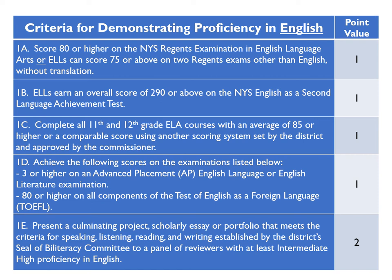Criterion 1A: students may score 80% or higher on the New York State Regents examination in English Language Arts. ELLs may also earn a point under this criterion by scoring 75% or above on two Regents exams other than English without translation. Criterion 1B: ELLs may achieve an overall score of 290 or better on the New York State English as a Second Language Achievement Test, also called the NYSESLAT. Criterion 1C: students may complete all 11th and 12th grade ELA courses with an average of 85% or higher. Criterion 1D: students may earn a 3 or higher on an AP English Language or English Literature examination; ELLs may also earn a point under this criterion by scoring 80% or higher on all components of the TOEFL. Criterion 1E: students may earn two points by presenting a culminating project, scholarly essay, or portfolio demonstrating speaking, listening, reading, and writing at the intermediate high level in English to a panel of two or more reviewers.